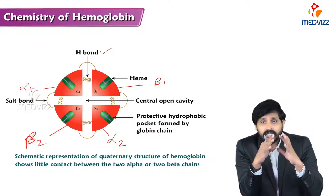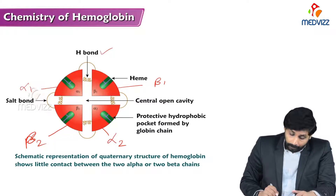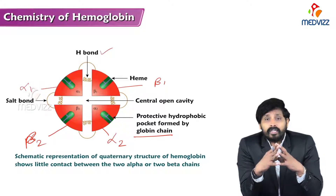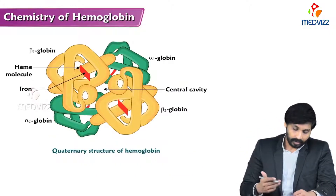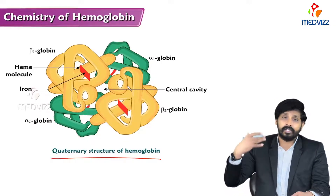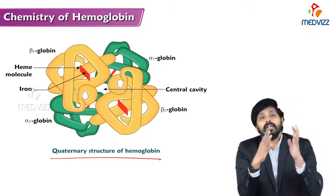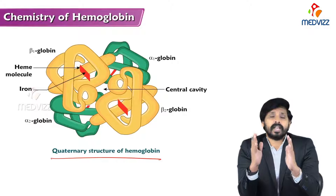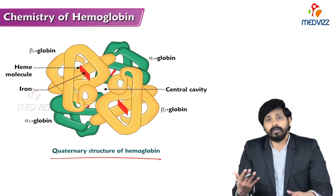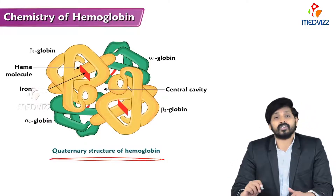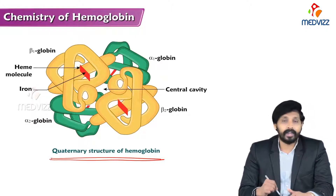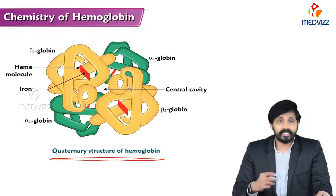There is a cavity located in the center which is open. The protective hydrophobic pocket is formed by the globin chain and this hydrophobic pocket protects heme. This is a quaternary structure of protein organization — when more than two polypeptide chains are joined by non-covalent bonds, it is called an oligomer. Hemoglobin, having four polypeptide chains, is an example of an oligomer and represents the quaternary structure of protein.